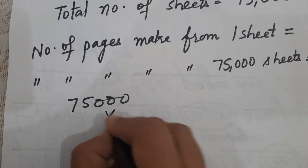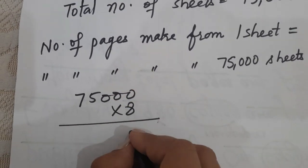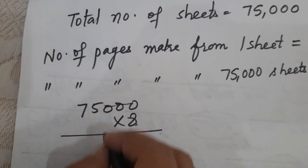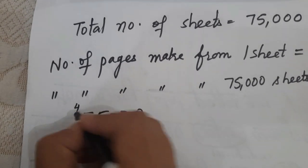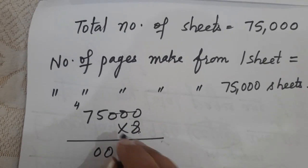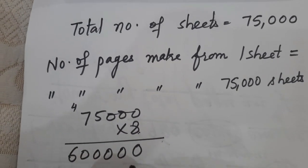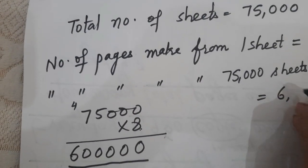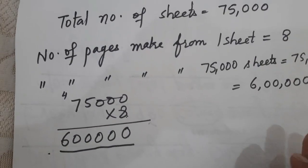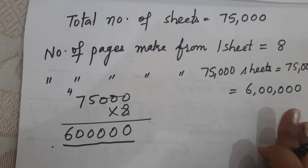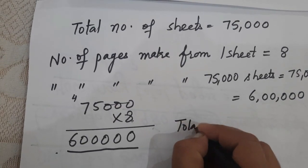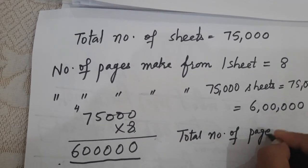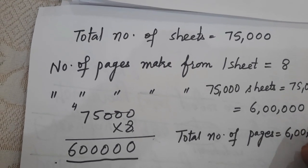Multiplying 75,000 by 8: 8 times 0 is 0, 8 times 0 is 0, 8 times 0 is 0, 8 times 5 is 40 — write 0 carry 4 — and 8 times 7 is 56, plus 4 gives 60. So the total number of pages is equal to 6 lakh (600,000).